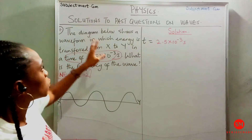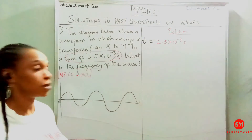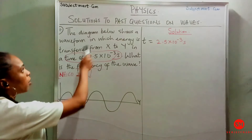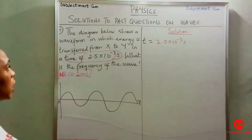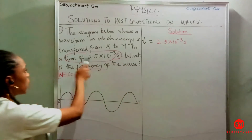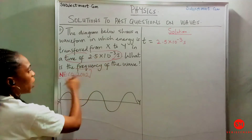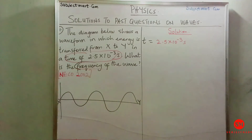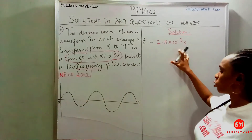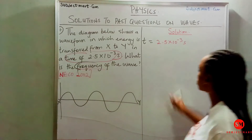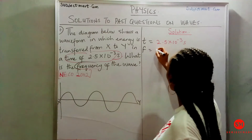Solutions to past questions on waves. Today we will be learning about waves. The diagram below shows a wave and the energy transpires from X to Y. The time is given and we are asked to find the frequency of the wave. t is 2.5 times 10 to the power minus 3, and f, which is the frequency, is what we don't know.